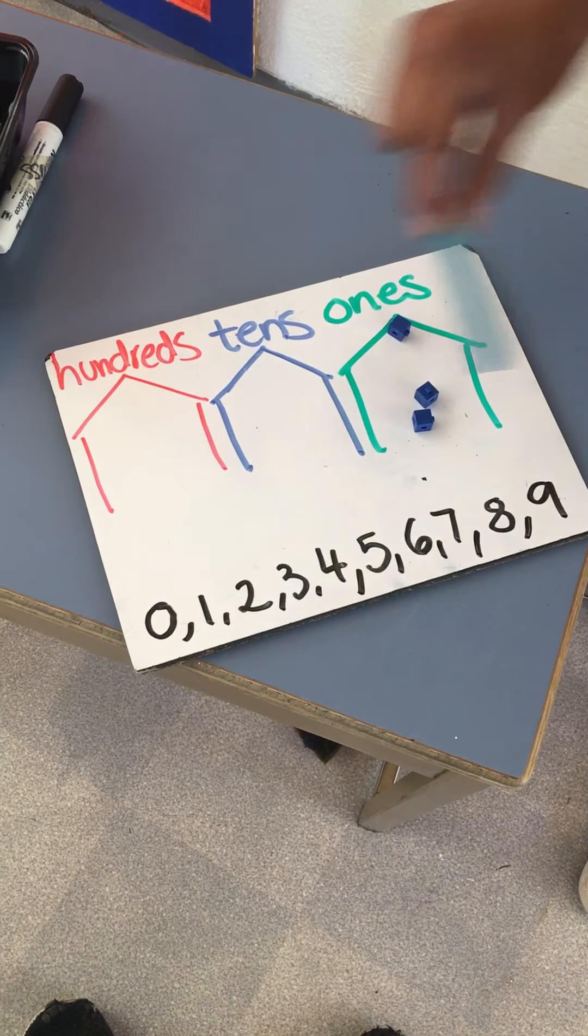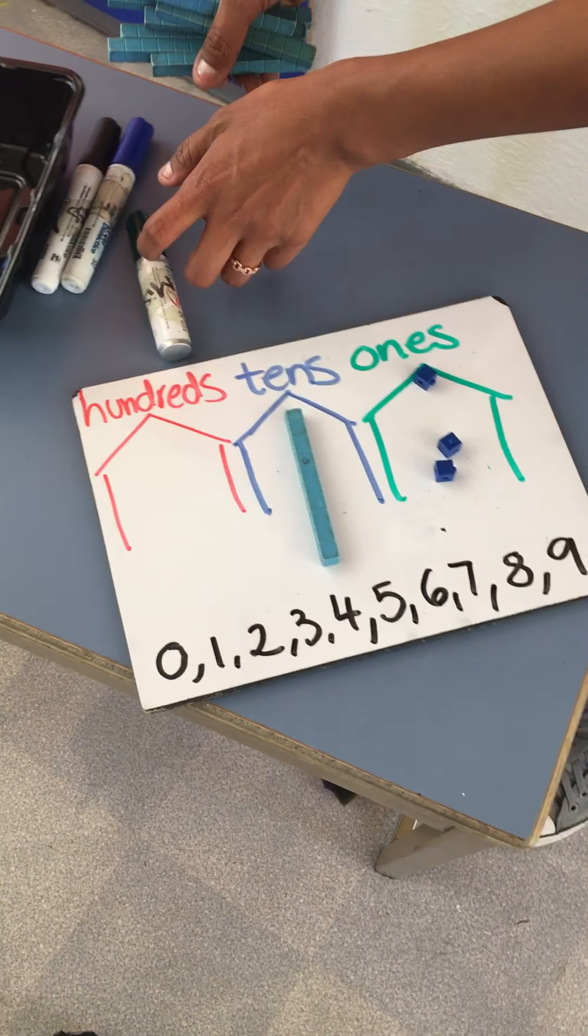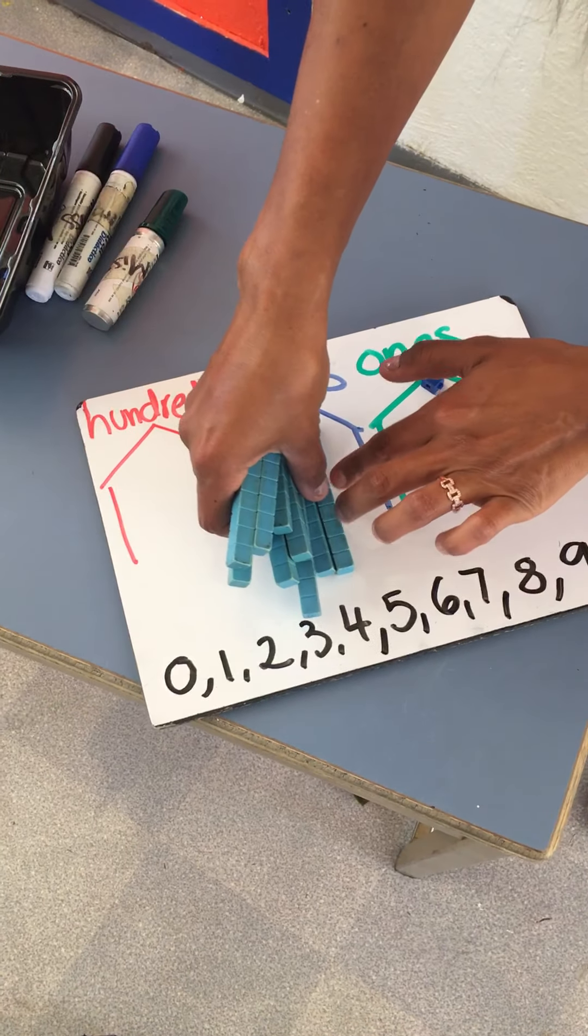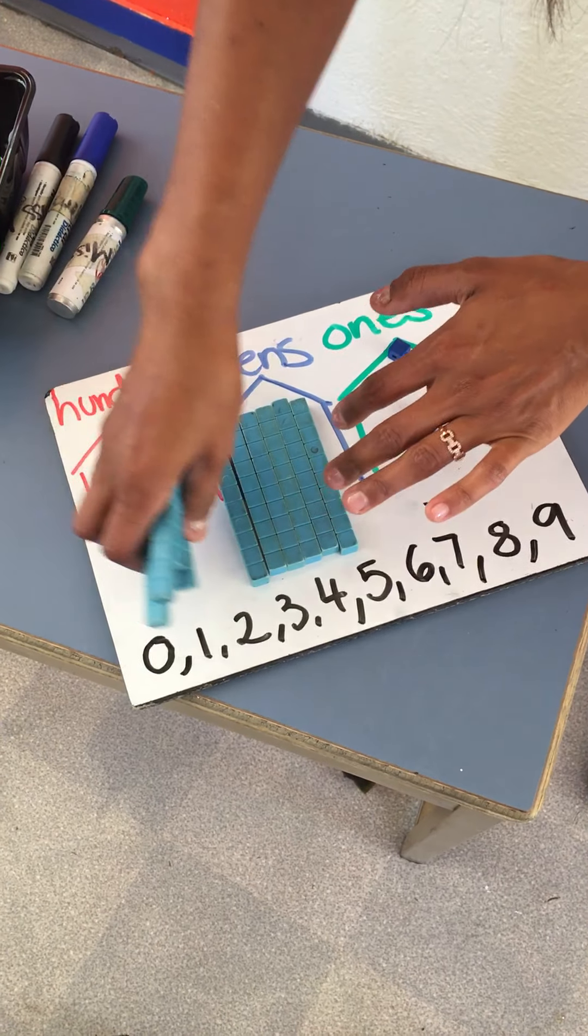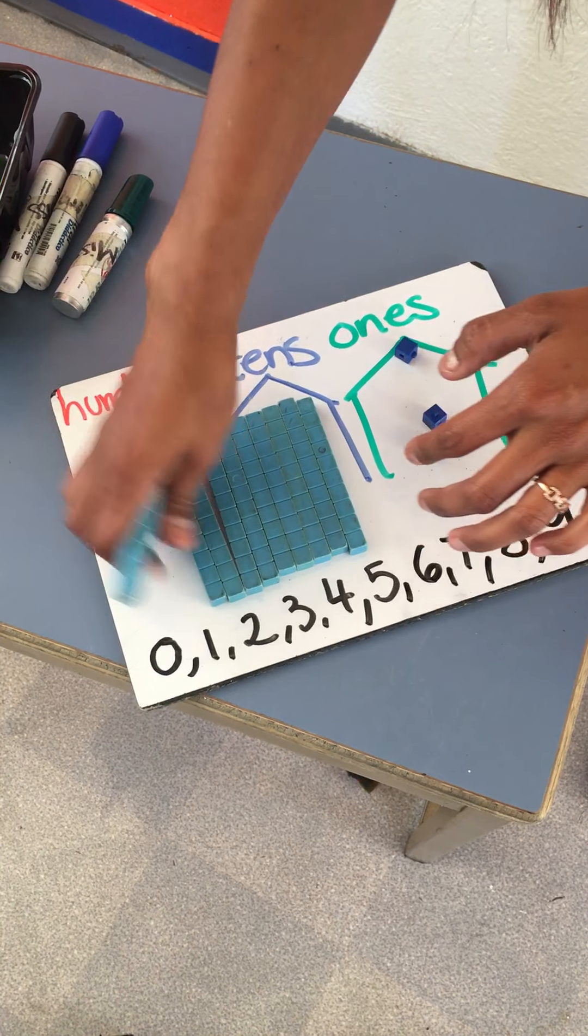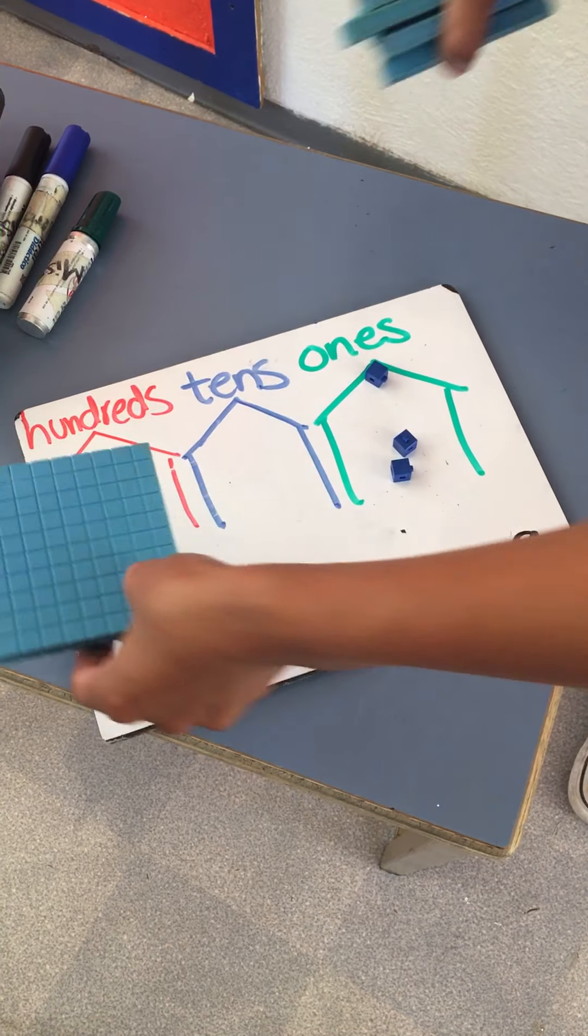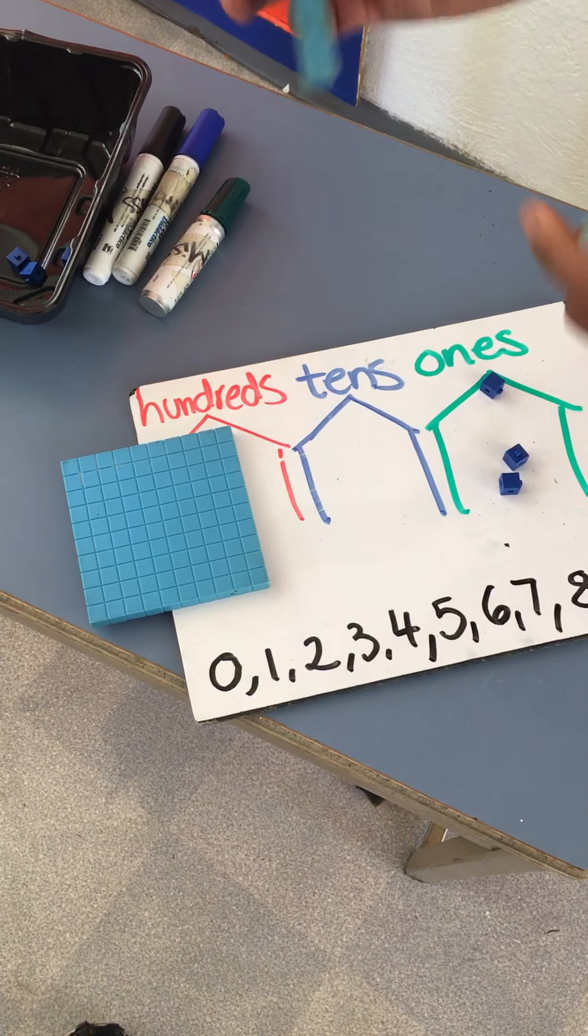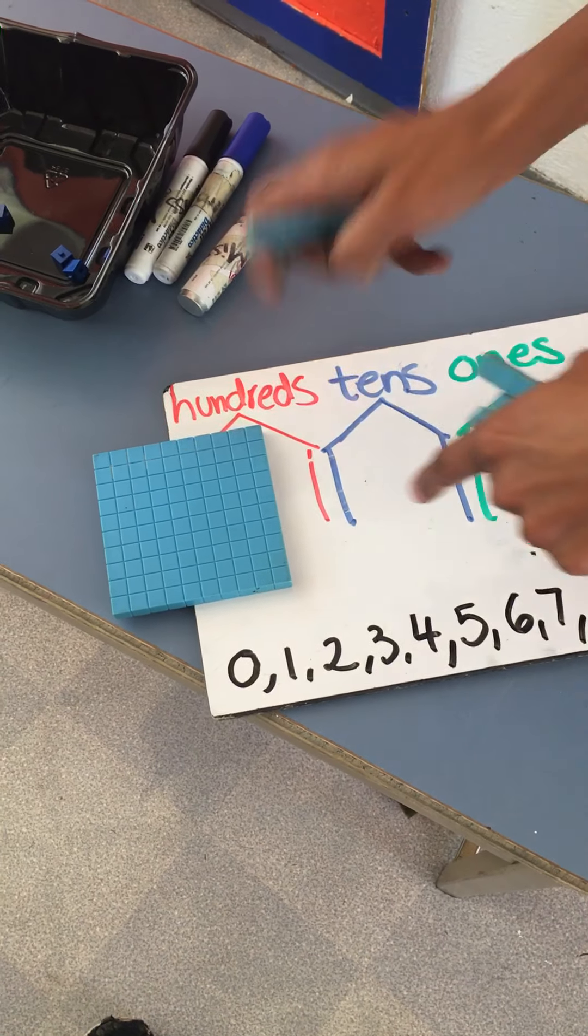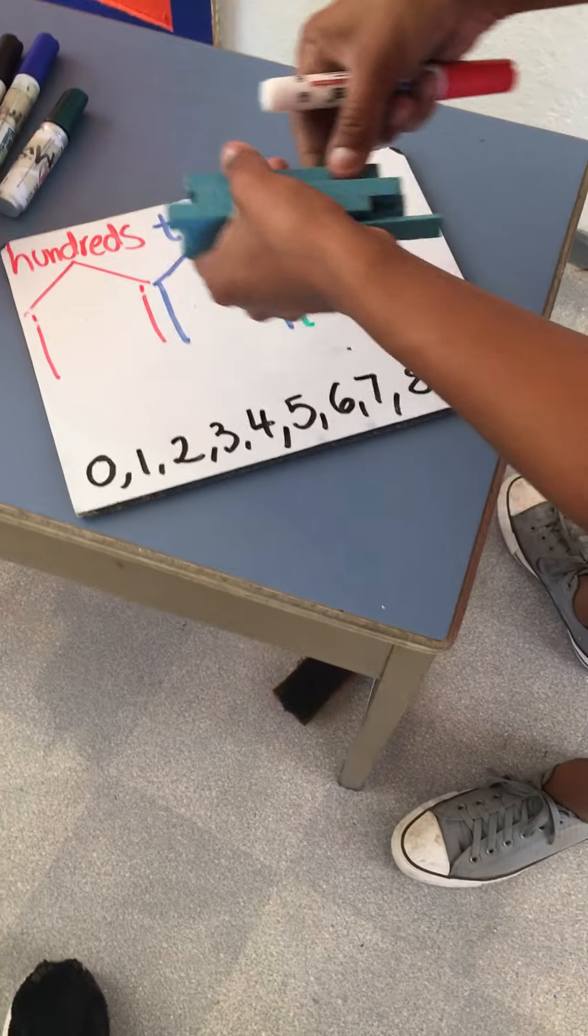I'm gonna show you something trickier. We already know that ten ones turn into a ten, but what happens if we put together ten tens? One, two, three, four, five, six, seven, eight, nine, ten. Some magic happens and we get a hundred. Ten tens. If you count each one of them, are one hundred.